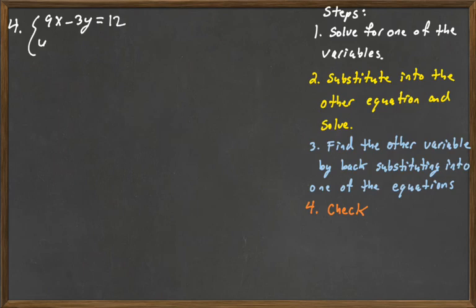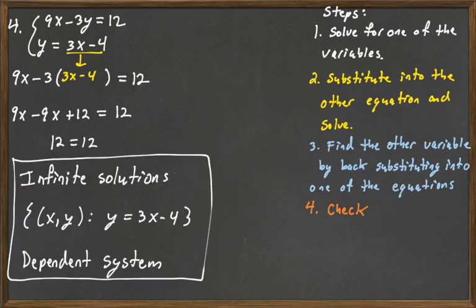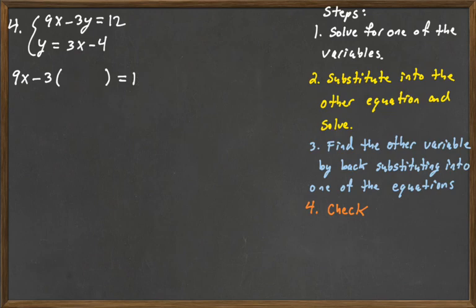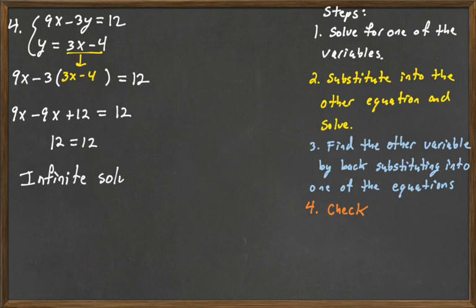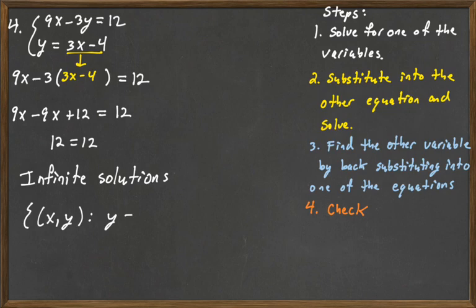Our last system is 9x minus 3y equals 12, and y equals 3x minus 4. Notice that the second equation is already solved for y, so the first step we get for free. We're going to substitute y equals 3x minus 4 into the first equation: 9x minus 3 times the quantity 3x minus 4 equals 12. So 9x minus 9x plus 12 equals 12, giving us 12 equals 12. That's a true statement — this means infinite solutions. These are actually the same line, and our solution is the set of all x comma y such that y equals 3x minus 4. We would say this is a dependent system.